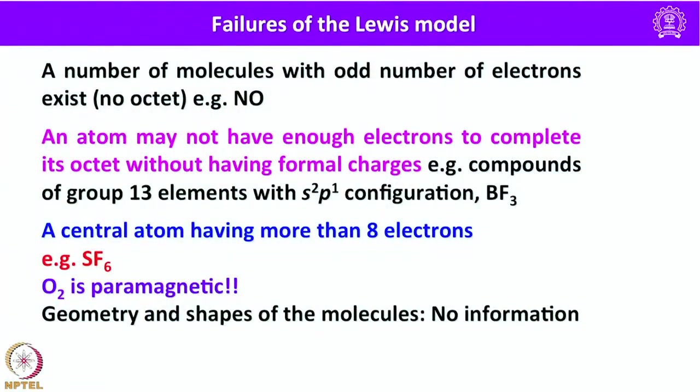What are the failures or limitations of the Lewis model? First, a number of molecules with an odd number of electrons exist, and Lewis structure always counts in pairs, so when an odd electron count occurs, the Lewis method fails to give a satisfactory structure — for example, NO has 5+6=11 electrons, so a satisfactory Lewis structure cannot be written. Second, an atom may not have enough electrons to complete its octet without formal charges, as with group 13 elements having s²p¹ configuration, resulting in only 3 bonds and 6 electrons — example: BF3. Third, molecules may have more than 8 electrons, such as sulfur hexafluoride with 12 electrons.